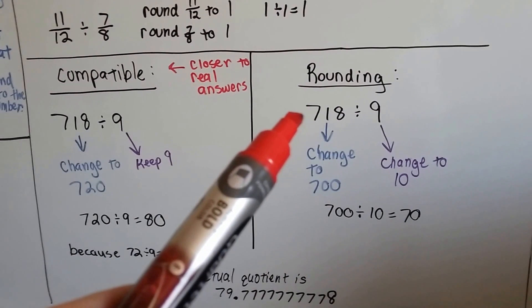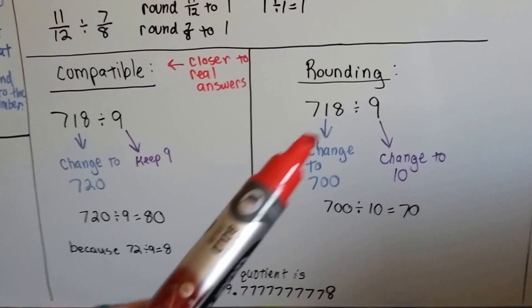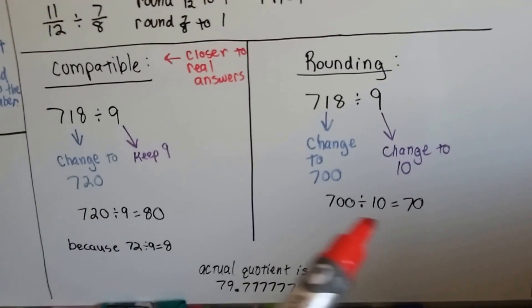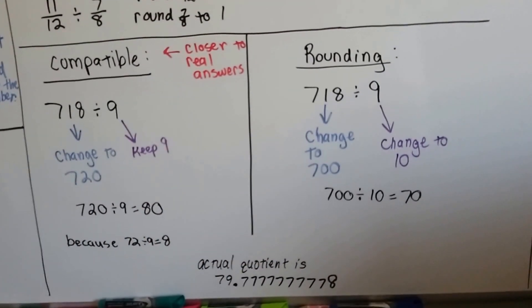If we had rounded, we would have changed the seven eighteen to seven hundred. The nine could have been changed to a ten, and we would have ended up with seventy. Not as accurate as doing the compatible numbers.